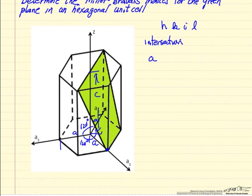A2, this plane is parallel to the A2 axis, so it never intersects. So the intersection is infinity.